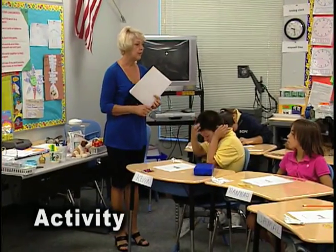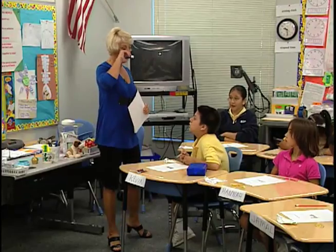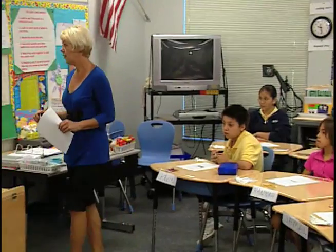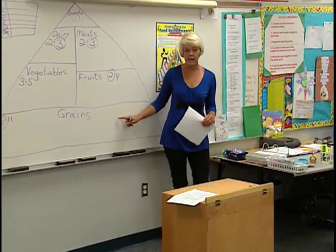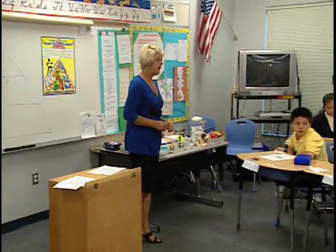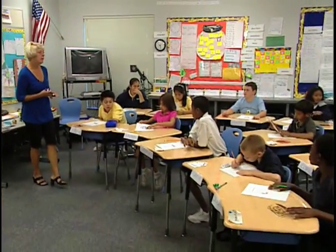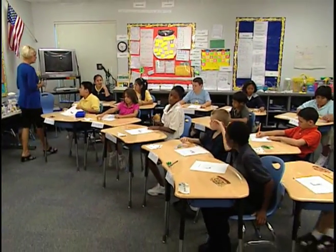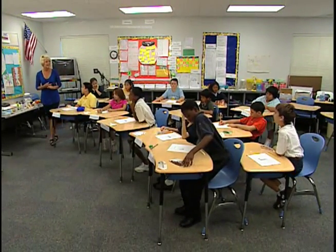I gave each of you a food. We're going to tape your foods on the right spot on the food pyramid. So let's start with the bottom here — grains. If you think you have a grain, stand up and hold up your picture. A grain would be cereal, bread, macaroni, spaghetti, noodles. If you think you have a grain, stand up.